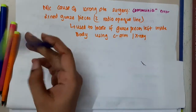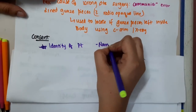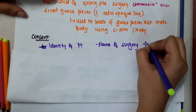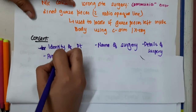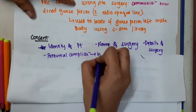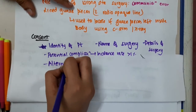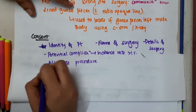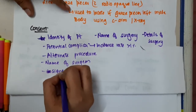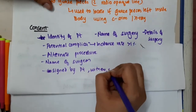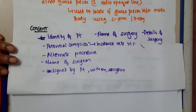Consent should include the identity of the patient, the name and details of the surgery to be performed, potential complications with an incidence rate of more than 1%, alternate procedures available, and the name of the surgeon. Consent should be signed by the patient, a witness, and the surgeon.